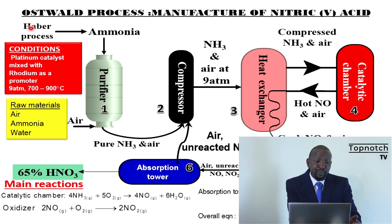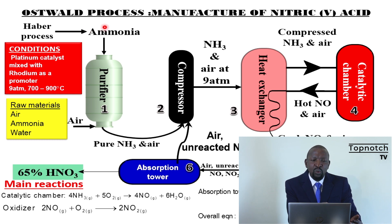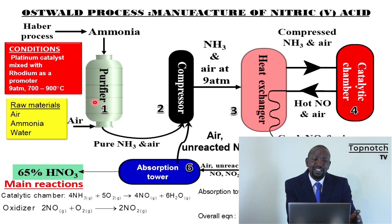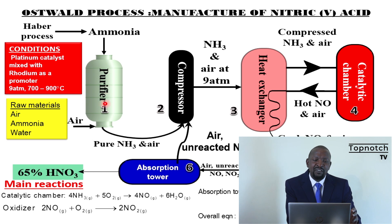The first raw material is ammonia. Where do we get the ammonia from? From the above process — the Haber process gives us the ammonia. Once you have the ammonia and the air: ammonia is not found freely in air, but you can find air. We normally use air and not pure oxygen in this industrial process because air is cheaper. The first step is to purify the gases — the gases are passed through a purifier. This is to remove impurities that could poison the catalyst or reduce the efficiency of the catalyst.